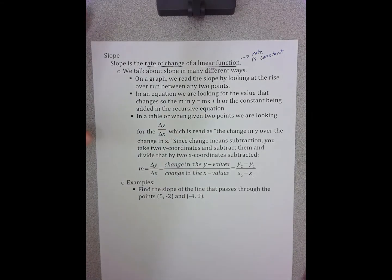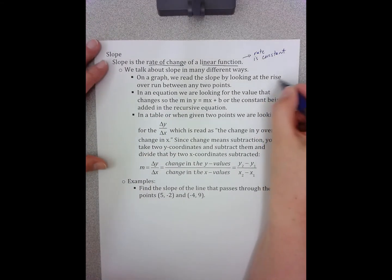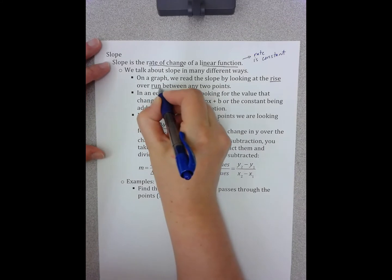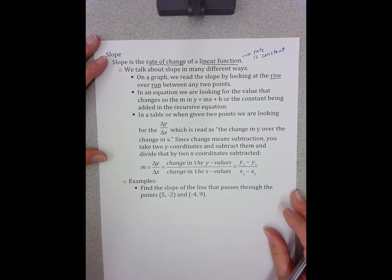On a graph, we read slope by looking, counting rise over run, so we get a fraction between any two points.